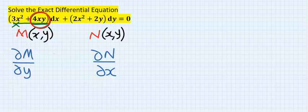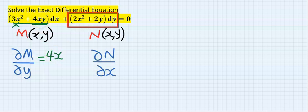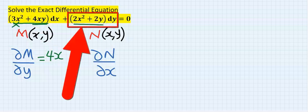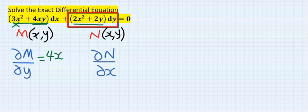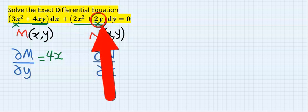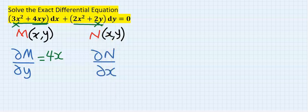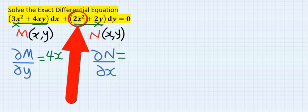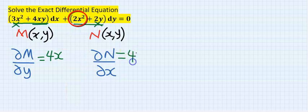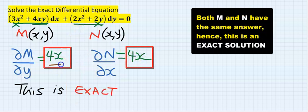I will just differentiate y, and my answer is one. For the remaining x, next I will go to the function N and this time differentiate partially with respect to x, respecting only the terms having x. If you differentiate this you are going to get 4x. Because both partial derivatives are the same answer, this is an exact differential equation.